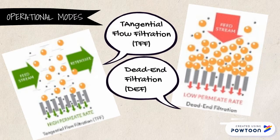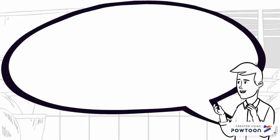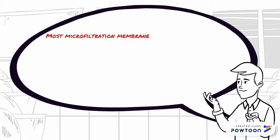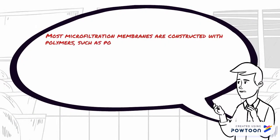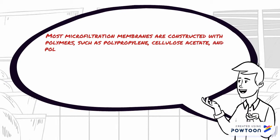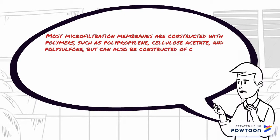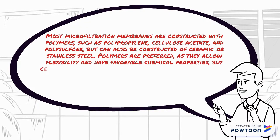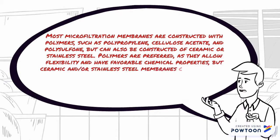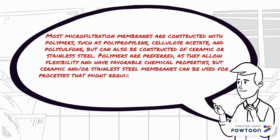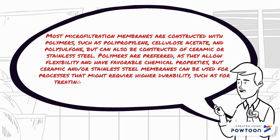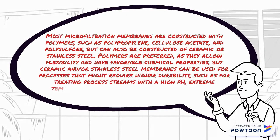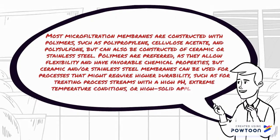Most microfiltration membranes are constructed with polymers such as polypropylene, cellulose acetate, and polysulfone, but can also be constructed of ceramic or stainless steel. Polymers are preferred as they allow flexibility and have favorable chemical properties, but ceramic and stainless steel membranes can be used for processes that require higher durability, such as treating process streams with high pH, extreme temperature conditions, or high solid applications.